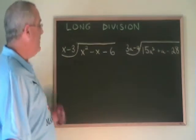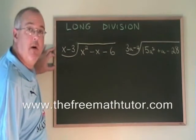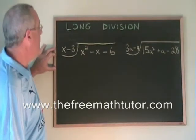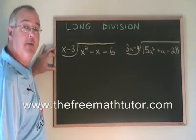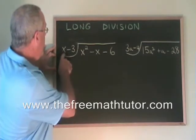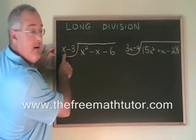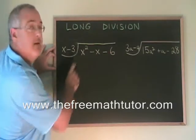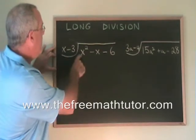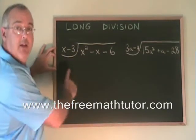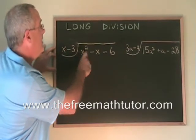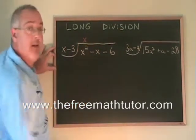The first example has x squared minus x minus 6 divided by x minus 3. The first thing we do is ask ourselves, what would we have to multiply this x by in order to get x squared? It's the same thing as if you divided x squared by x. x would have to be multiplied by another x to give x squared, so we write an x here.